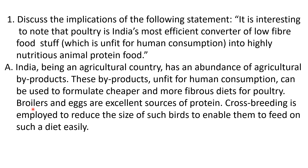Broilers, used for meat, and eggs are excellent sources of protein. When we give this agricultural byproduct feed to poultry and use that poultry for chicken meat and eggs, that fodder is being converted to protein very cheaply with the help of poultry farming. Cross breeding is further employed to reduce the size of such birds to enable them to feed on such a diet easily.